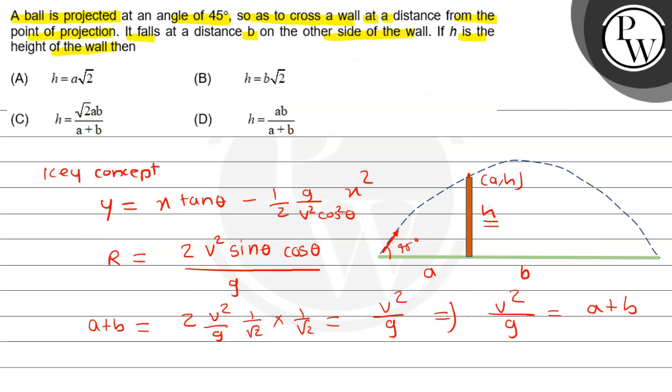तो यहां से H की value आती है AB divided by (A+B). तो option D is correct. I hope you understand. Thank you. Best of luck.